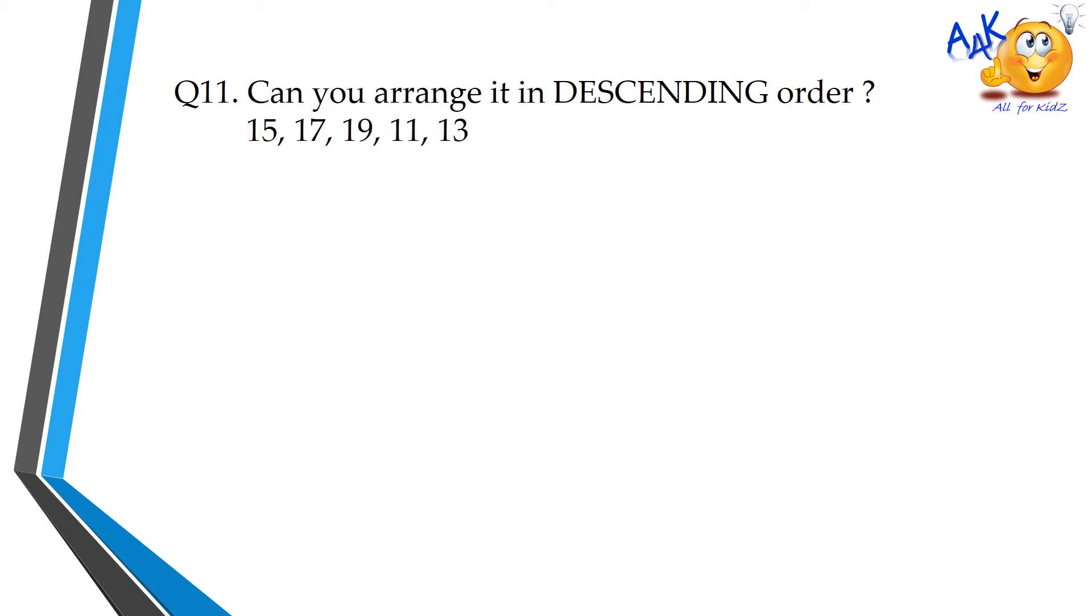Q11. Can you arrange it in descending order? 15, 17, 19, 11, 13. The descending order of the above given number is 19, 17, 15, 13, 11.